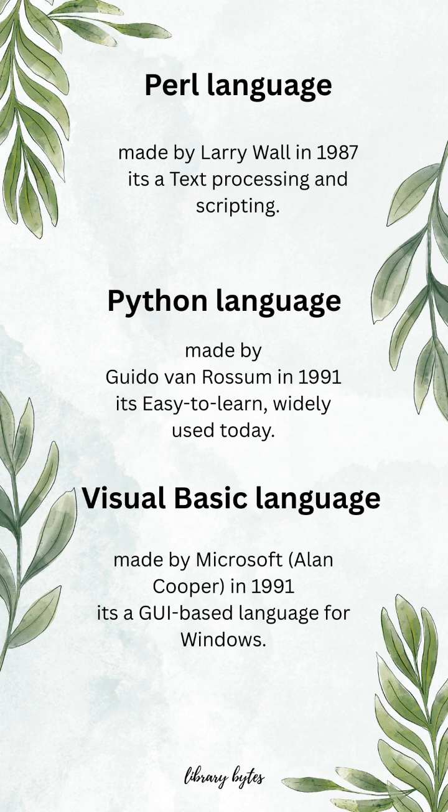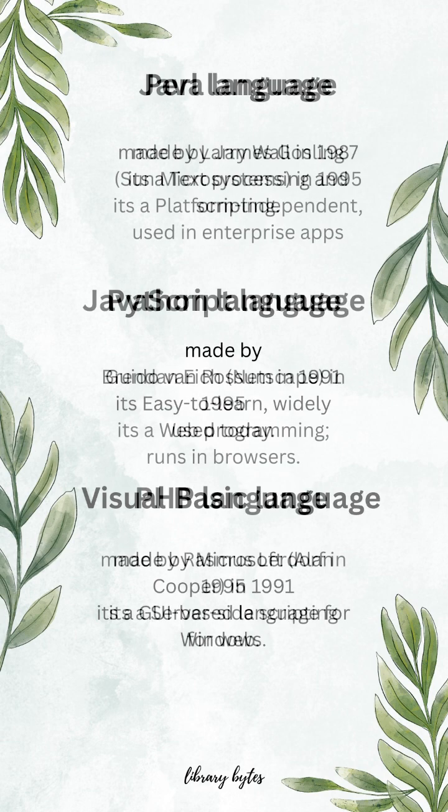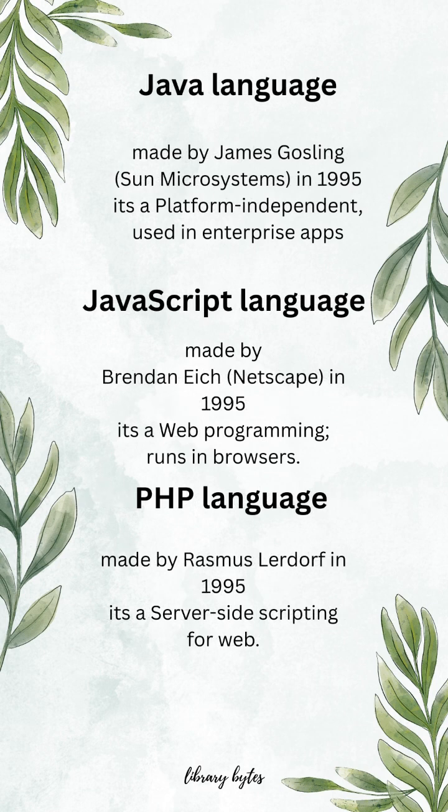Visual Basic, made by Microsoft in 1991. It's a GUI-based language for Windows. Java, made by James Gosling in 1995. It's platform-independent and used in enterprise applications.